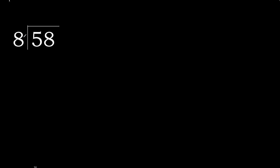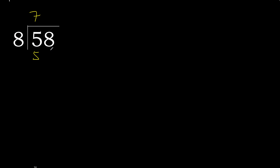58 divided by 8. 5 is less, therefore next. 58 is not less, therefore we work with 58. 8 multiplied by which number is nearest to 58 but not greater? 8 multiplied by 8 is 64 — 64 is greater. Multiply by 7: 56 is not greater. Subtract: remainder is 2. Next.